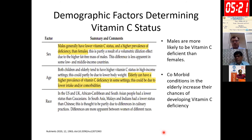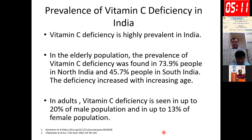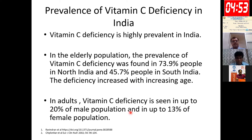Demographically, males are more likely to develop vitamin C deficiency than females, and comorbid conditions in the elderly increase the chances of developing deficiency. Vitamin C deficiency is highly prevalent in India: in elderly populations it was found to be around 74% in North India and around 46% in South India, and deficiency increases with age. In adults, around 20% of males suffer from vitamin C deficiency, compared to around 13% of females.